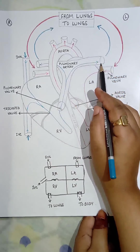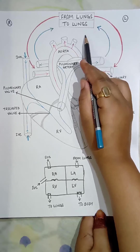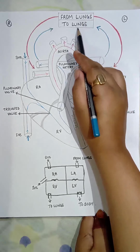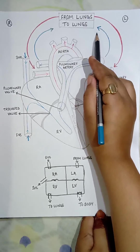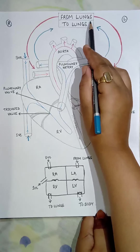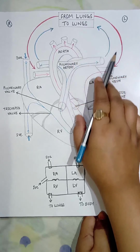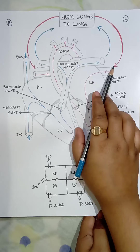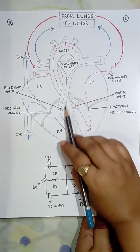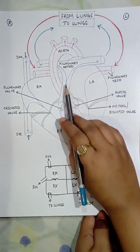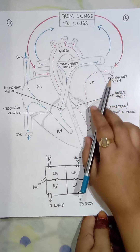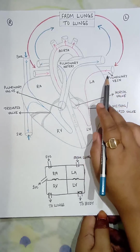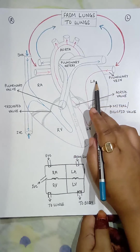In the lungs, the deoxygenated blood gets purified and converted to oxygenated blood. From the lungs, the oxygenated blood returns through the pulmonary vein — this is the opposite situation I mentioned earlier: the pulmonary artery carries deoxygenated blood, while the pulmonary vein brings oxygenated blood from the lungs back to the heart, entering the left atrium.